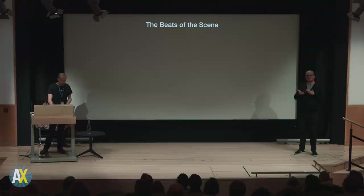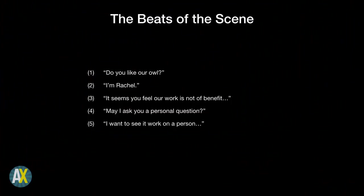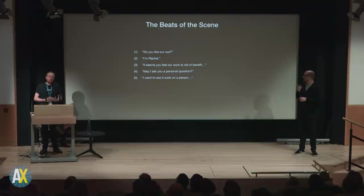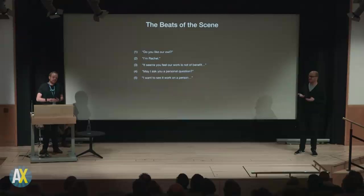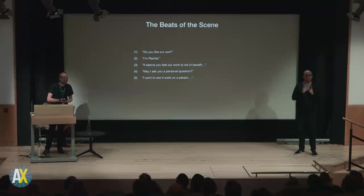What actually happens: she walks in and says 'Do you like our owl?' — basically 'do you like the weather?' Then she says 'I'm Rachel.' Then 'it seems you think our work isn't any good.' Then 'can I ask you a personal question?' Then Tyrell enters and says he wants to see the machine work. Those are the beats. But what's actually happening: 'Do you like our owl?' means 'I am unbelievably rich and far more important than you.' Deckard says it's artificial — 'I don't like it, it's fake.' She says 'I'm Rachel' — not her full title, nothing else — she doesn't need qualifiers. And Deckard replies 'Deckard,' using even fewer words. What a bastard. It's brilliant.